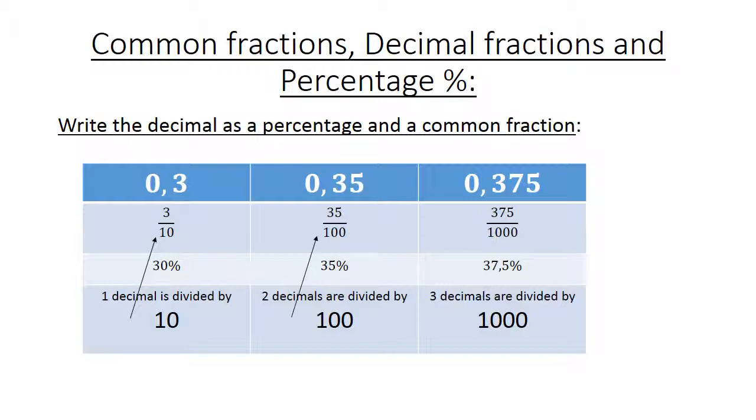The next decimal, 0,35, you divide it by 100. There are 2 decimals after the comma. And the third one, 0,375, we see 3 places after the comma. So you divide it by 1,000. And 375 divided by 1,000 is equal to 0,375 times 100 is equal to 37,5%. Thank you.